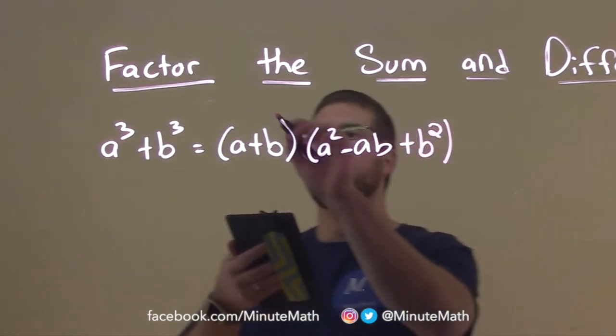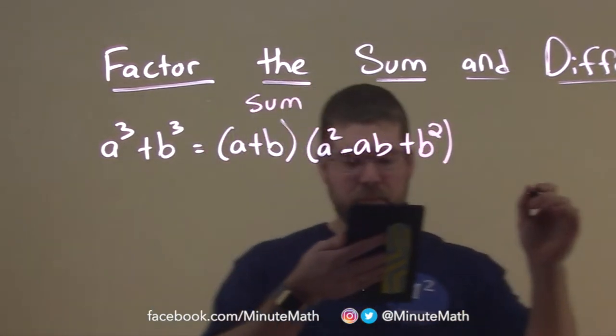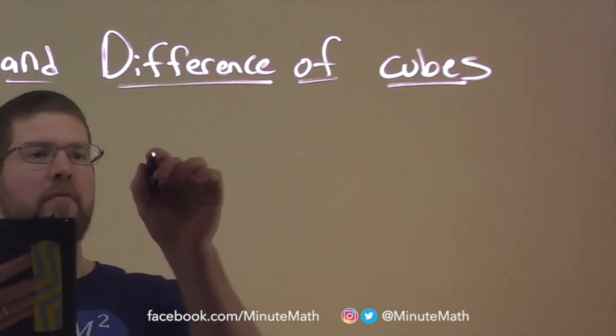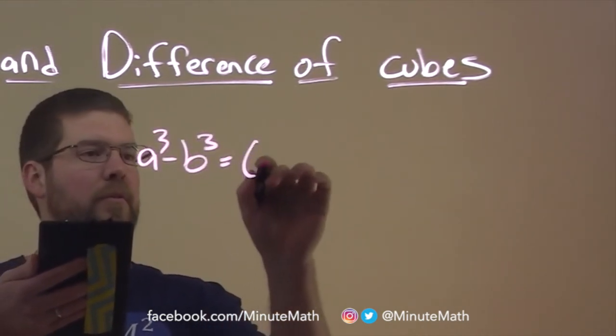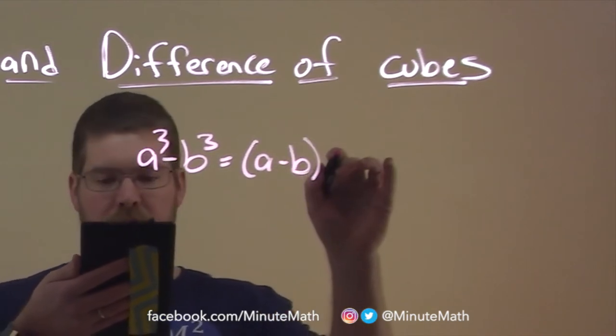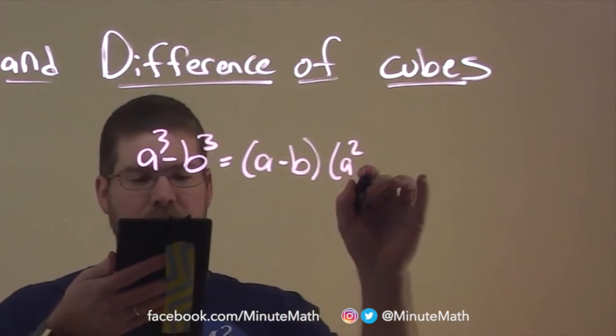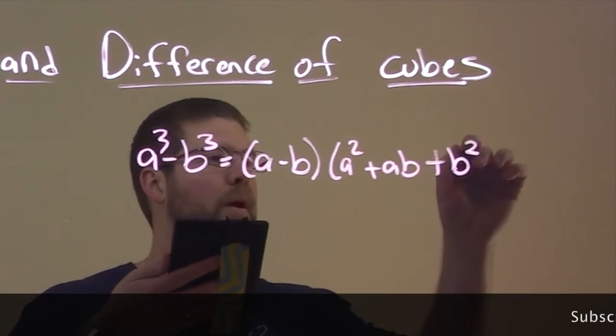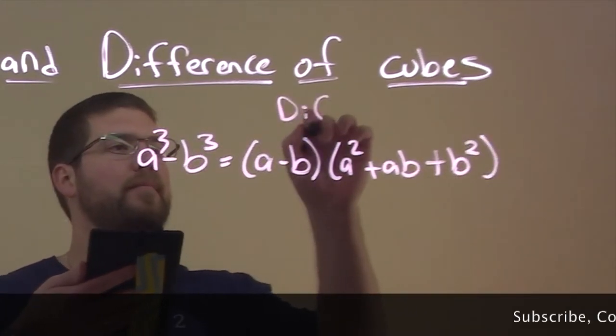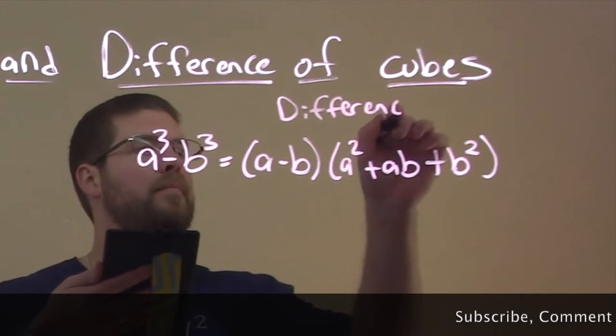This is the difference here: a to the third minus b to the third is equal to a minus b times a squared plus ab plus b squared. This is the difference. Okay.